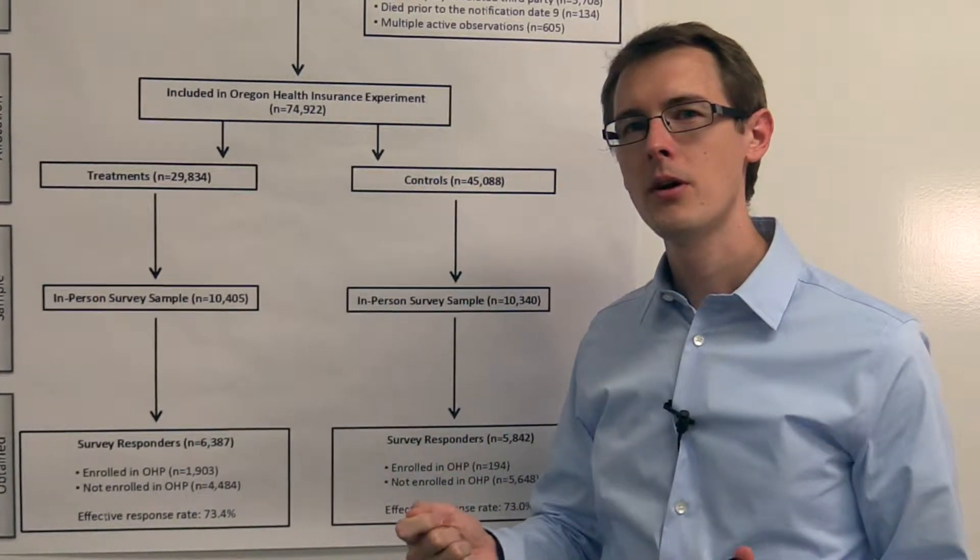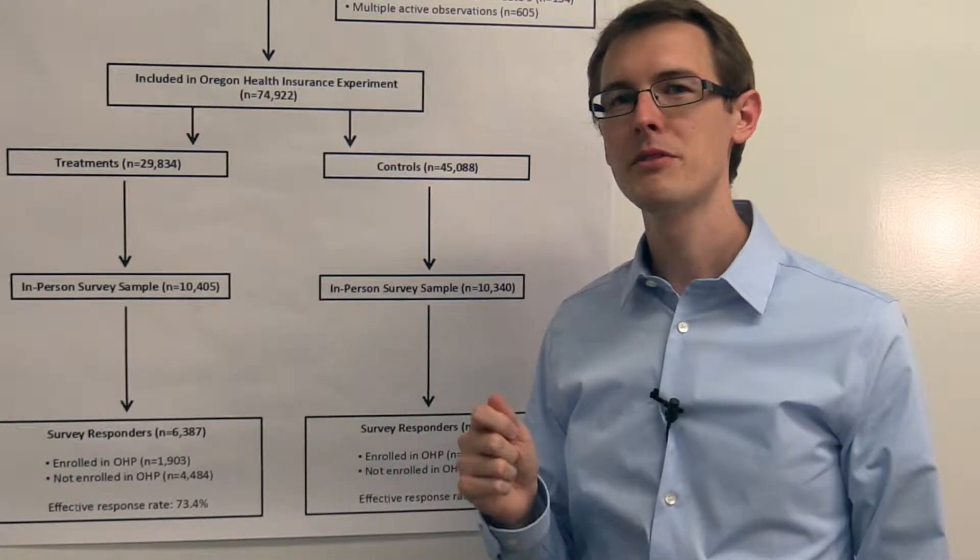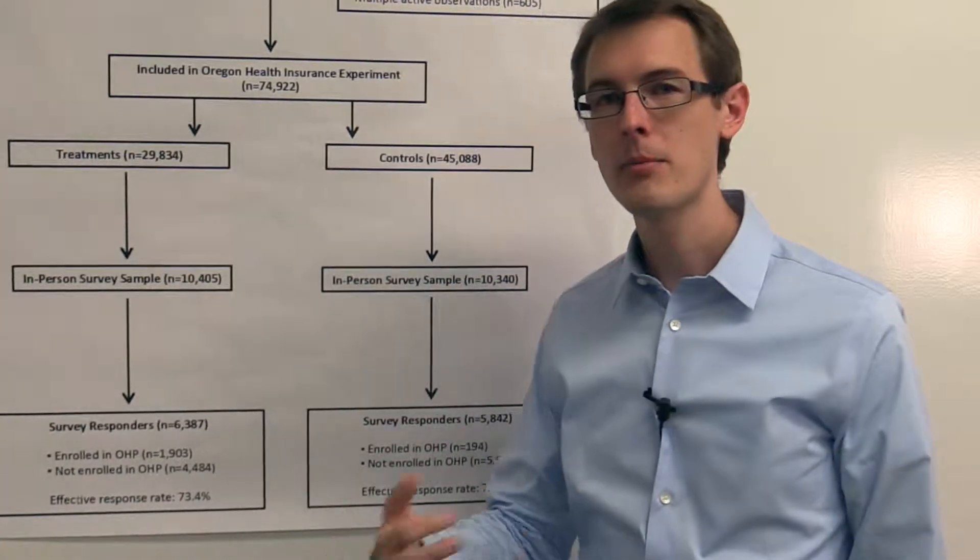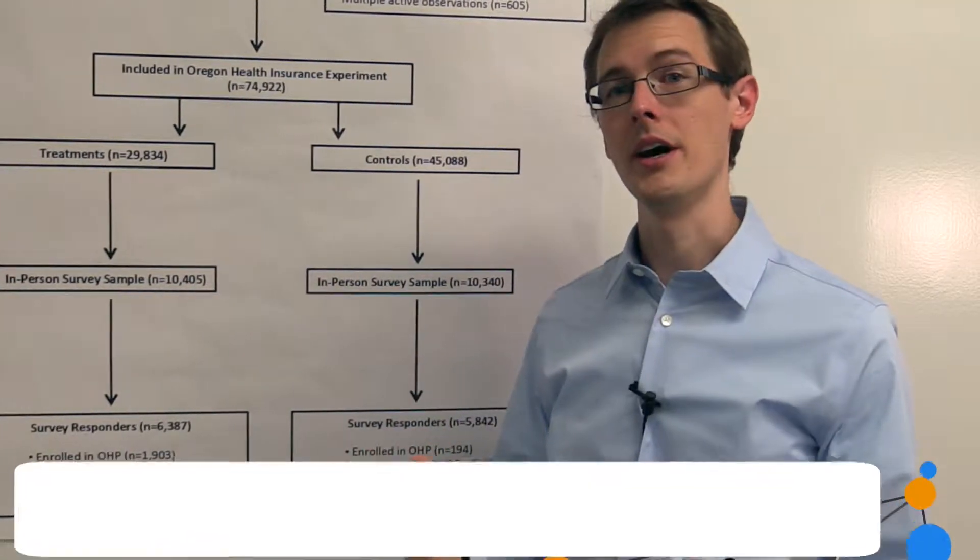So remember, why is that a problem? Well, the selection problem. That says that any time a variable is chosen by a person or a unit of analysis, there might be some extra bias going on.